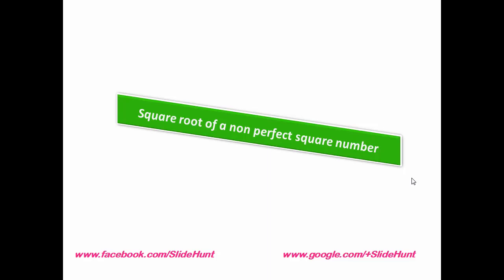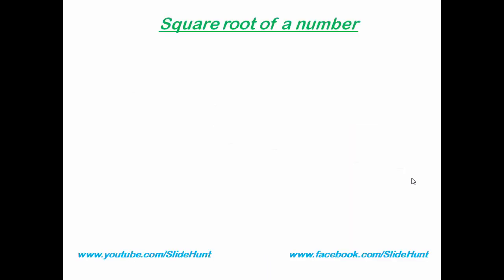So let's get started. For example, here we take the number 85. 85 is a non-perfect square number, so we can't apply the earlier method that we learned in our previous tutorial. Here we will use a new method. Let's see what that is.